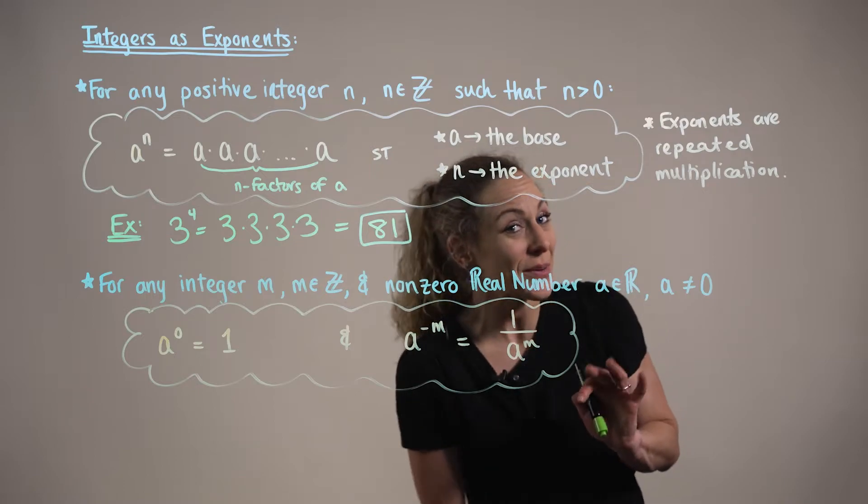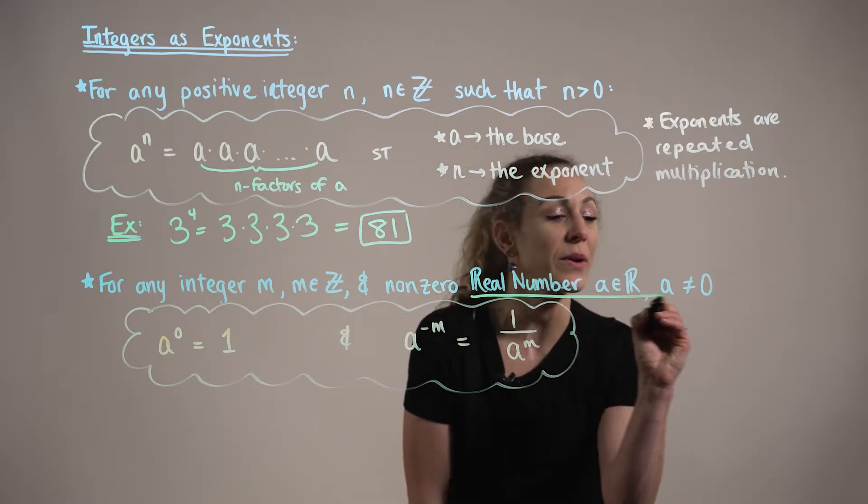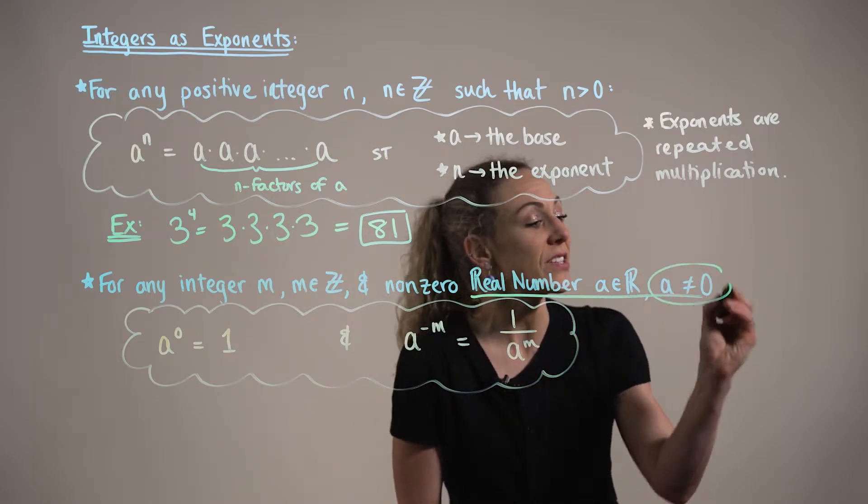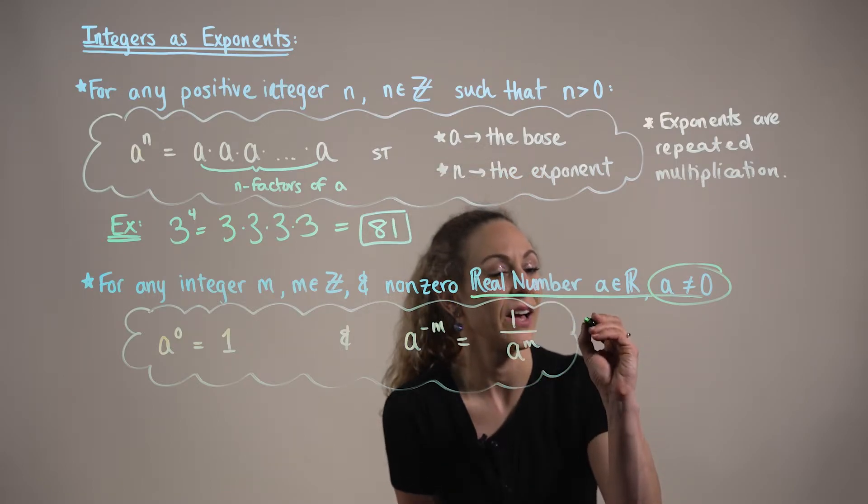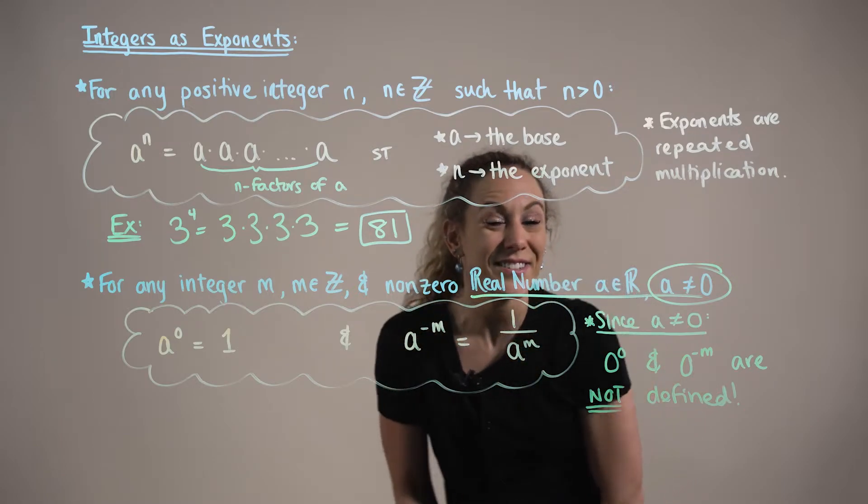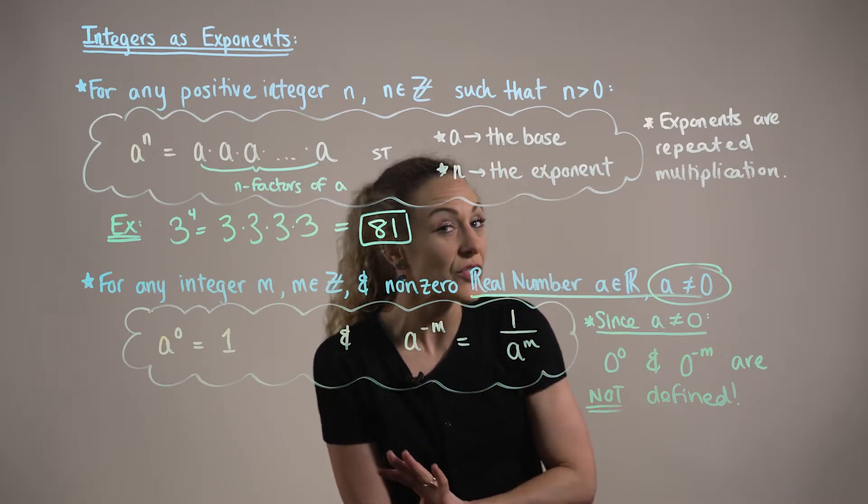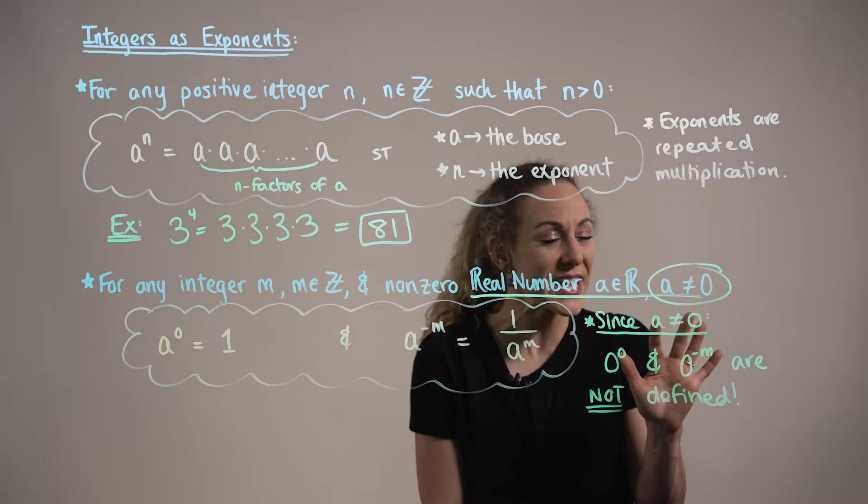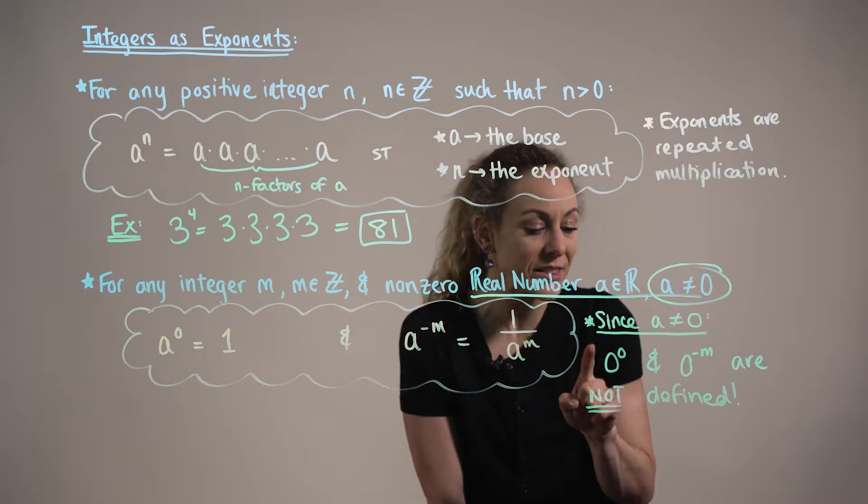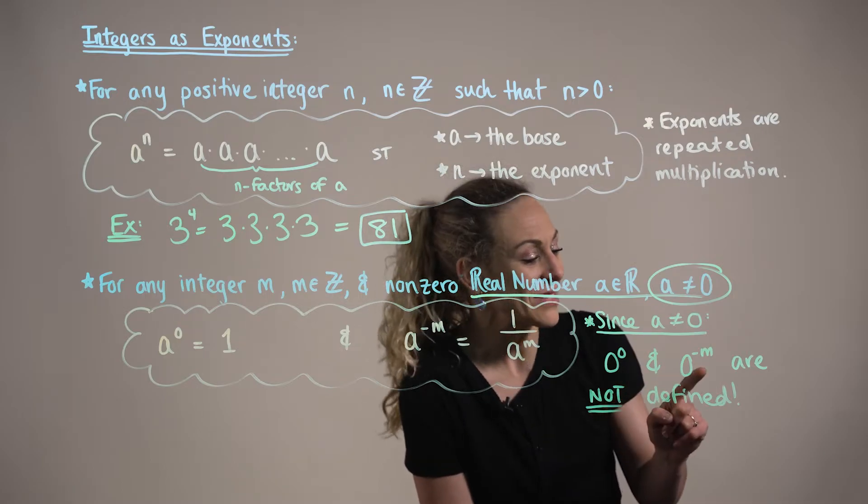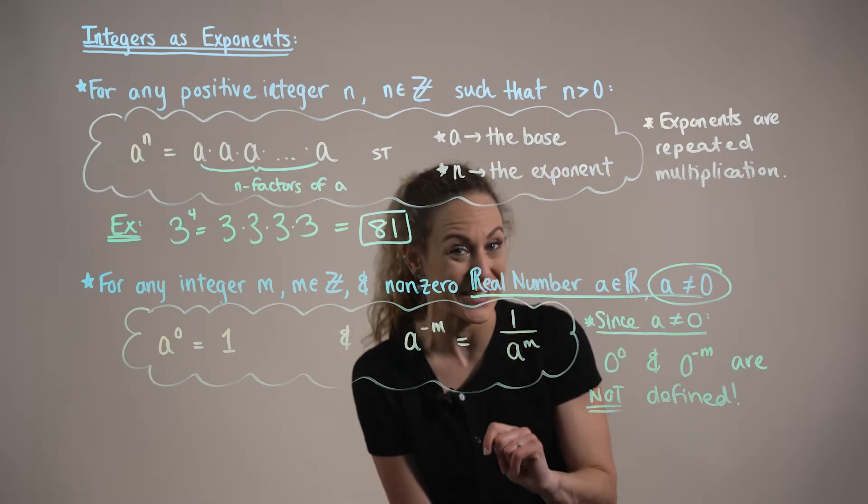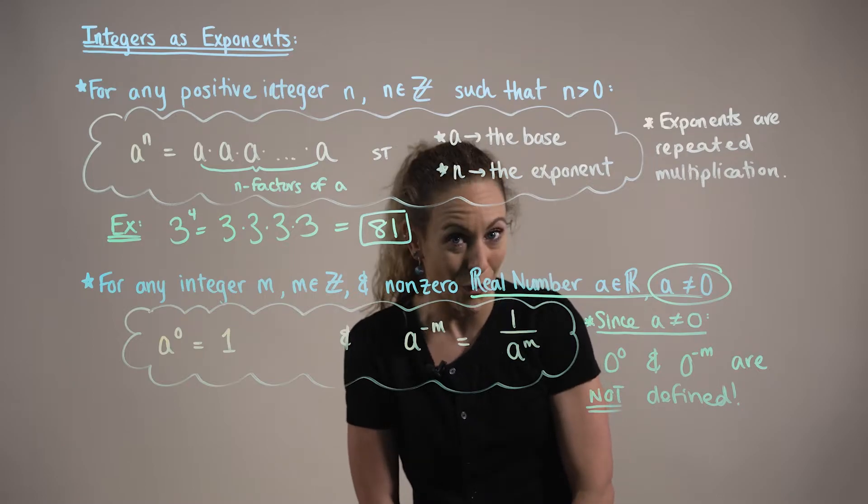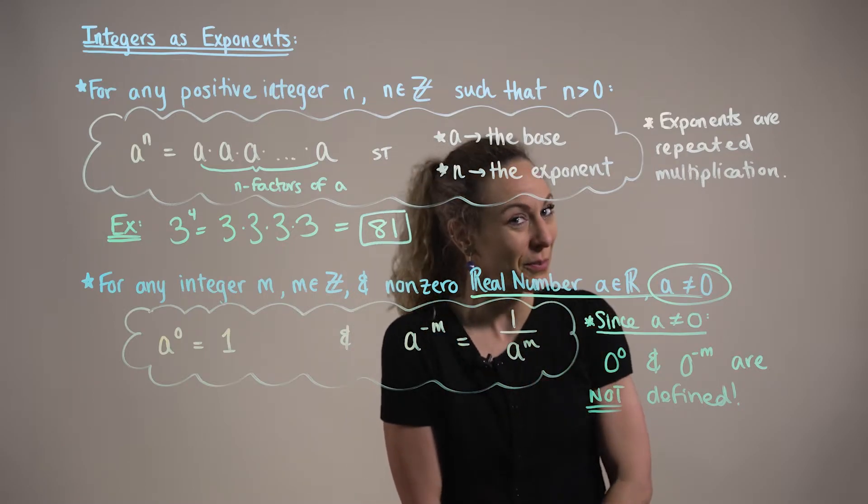I want to point out one cautionary piece of advice here. These two definitions hold true based on the assumption that a is non-zero. Since a cannot be equal to zero, we want to keep in mind that the terms zero to the zero and zero to the negative m, or even worse, one over zero, are both undefined. We actually refer to these two expressions as indeterminate forms, which we are going to explore in a lot more detail later in calculus.